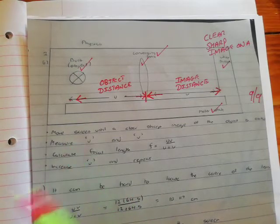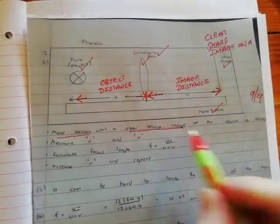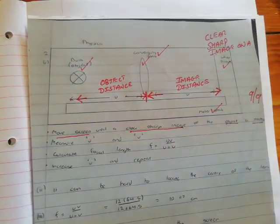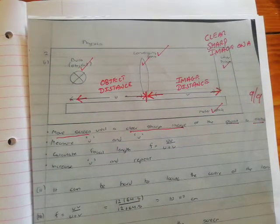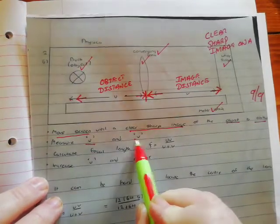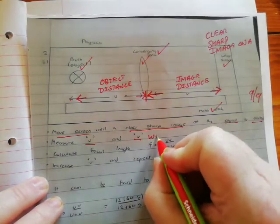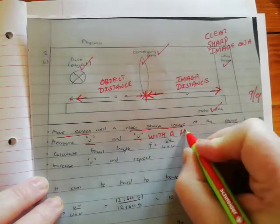Now, what else did the student say? Move the screen. That's good. Until a clear, sharp image of object is obtained. Perfect. Measure U and V. Perfect. But it's always correct to say what instrument. With a meter stick.